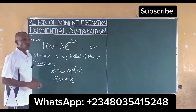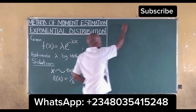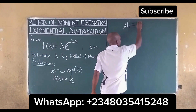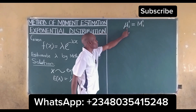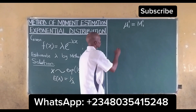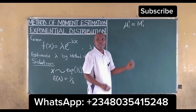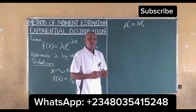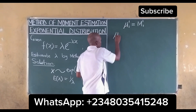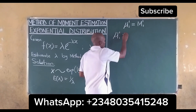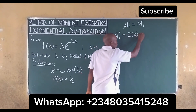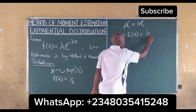The solution to the method of moments is when mu one equals m one — where mu is the population moment and m is the sample moment. Once we equate these, we can get our estimates. For the exponential distribution, mu is equal to the expected value of X, which is equal to 1 over lambda.